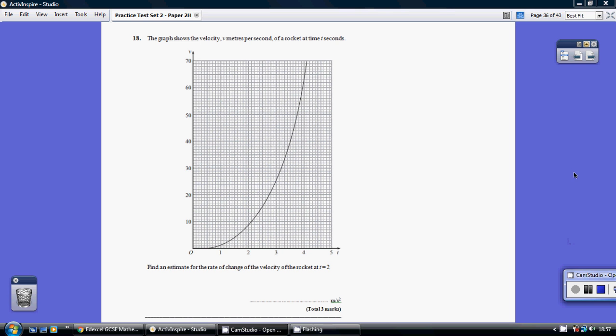Question 18. This graph shows the velocity measured in meters per second of a rocket at time t seconds. So this is a velocity time graph. It's velocity on the y-axis, time on the x-axis.